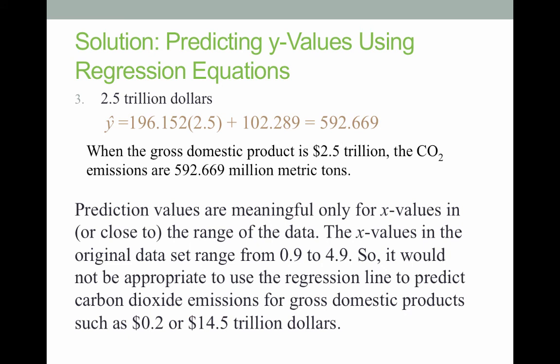Prediction values are only meaningful for x values in or close to the range of the data. The original data set has a range from 0.9 to 4.9, which is why we plugged in 1.2, 2.0, and 2.5. It would not be appropriate to use the regression line to predict carbon dioxide emissions for gross domestic products such as 0.2 — which is not in our range — or 14.5, which is way above our range.